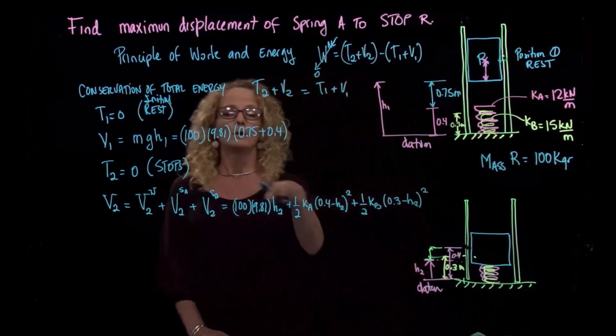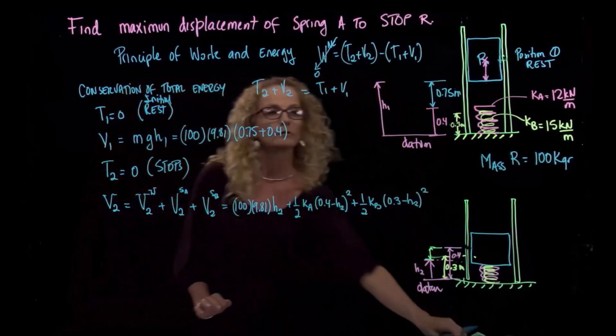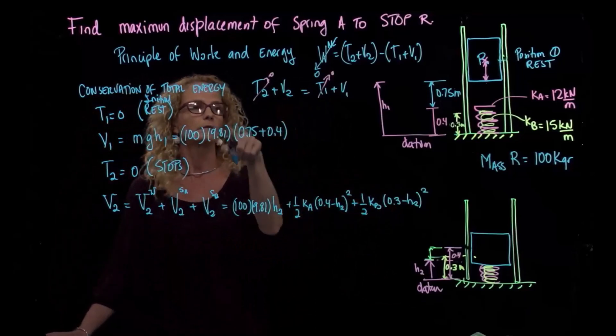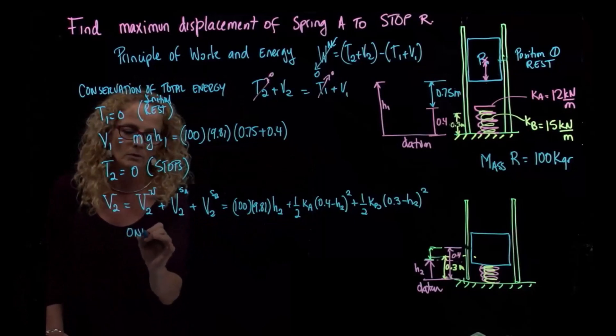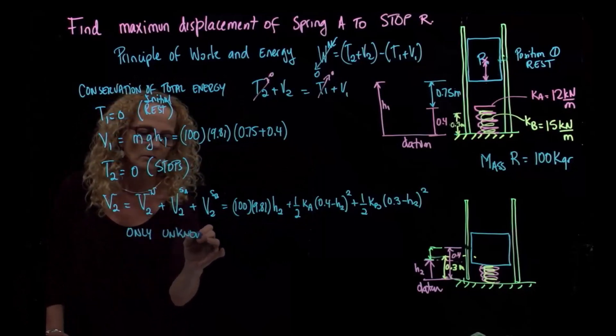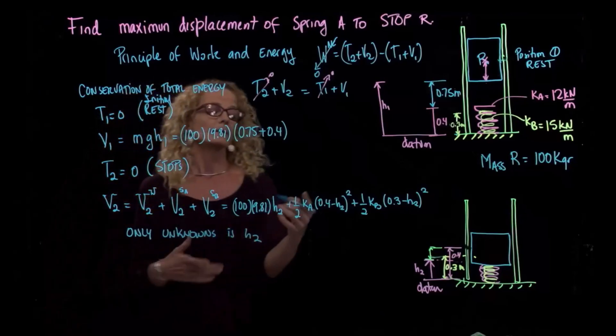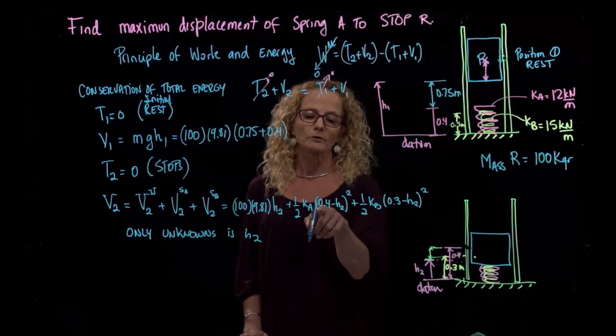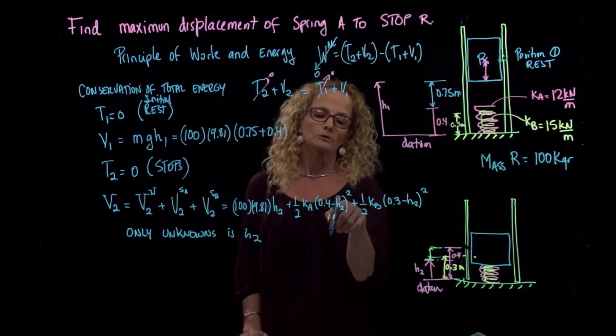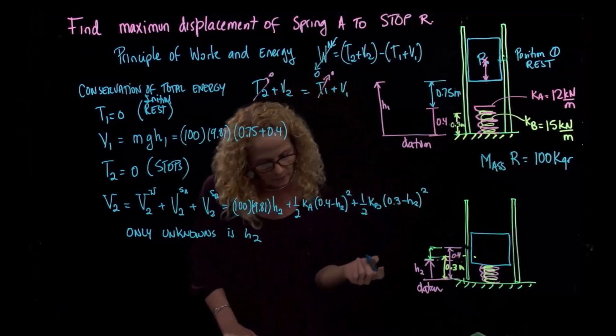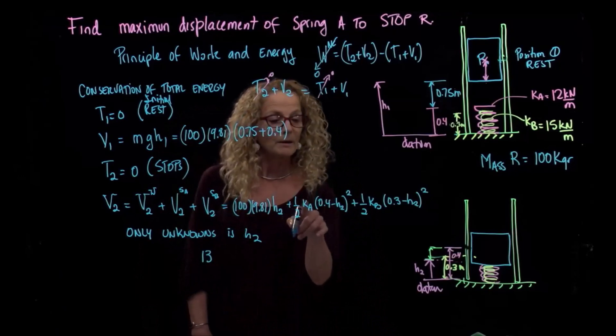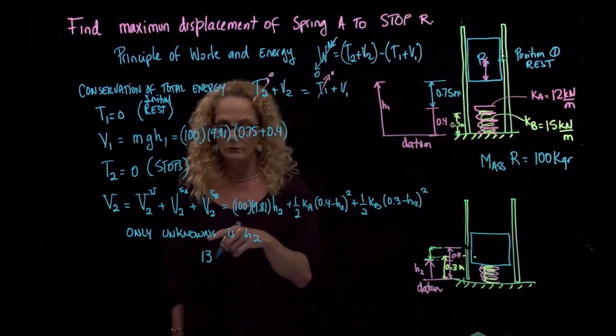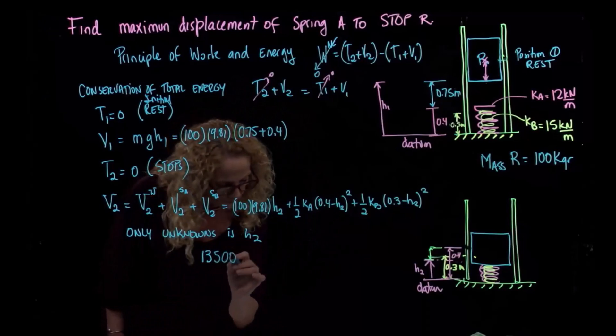So we plug in these numbers. We have these two values equal to zero, so we got these values equal. I have to plug all this here into here and all this here into here. As you see, the only unknown is H2. So this becomes a quadratic equation. If you extend this binomial, it will be 0.4 squared minus 2 times 0.4 times H2 plus H2 squared, and you do that for that binomial as well. Remember that Ka and Kb are given in kilonewtons, so you have to multiply by 10 to the third.